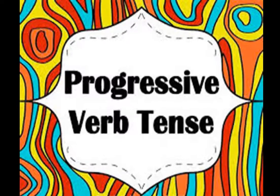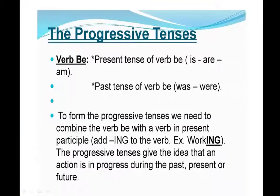Now we will see what is Progressive Verb Tense. In Progressive Tenses, it shows that the action is still in progress at the time of speaking. So to form the Progressive Tenses, we need to combine the verb with the present form by adding -ing to the verb.